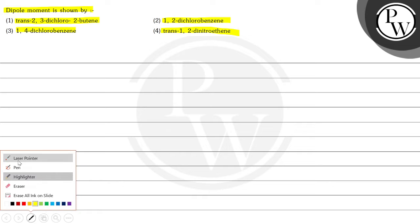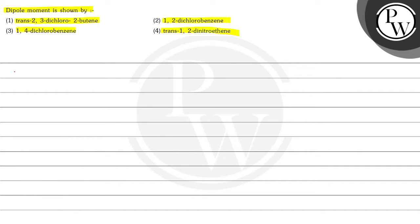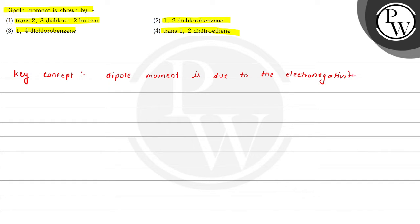Here we have to find out which compound will show the dipole moment. We will write our key concept first: dipole moment is due to the electronegativity difference, and also dipole moment is a vector quantity.